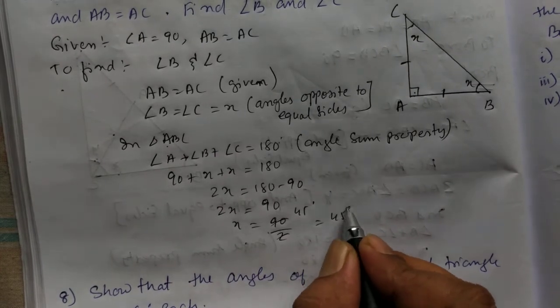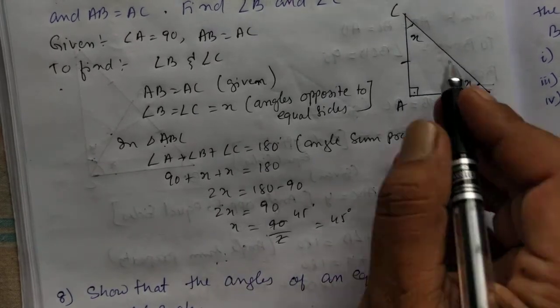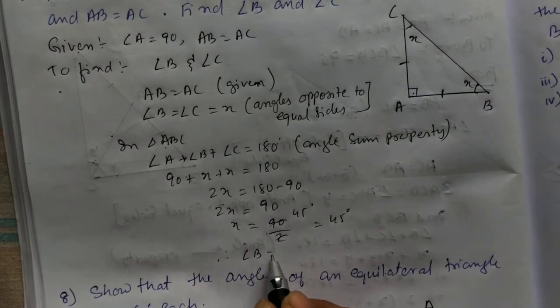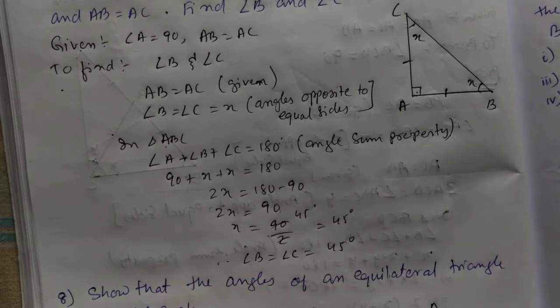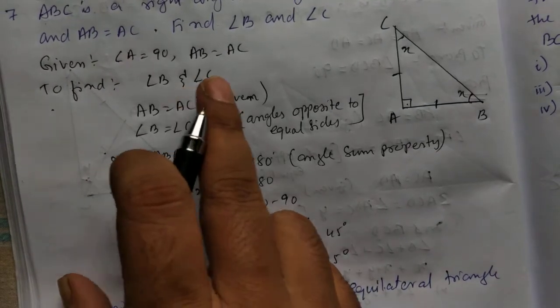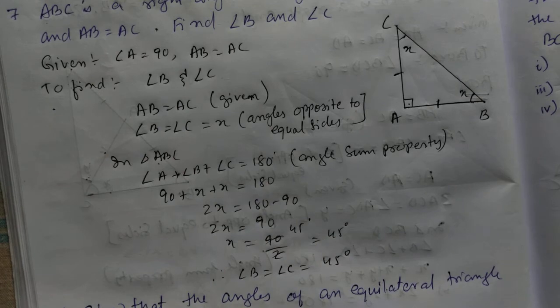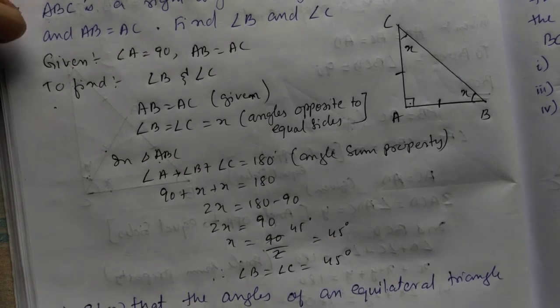So you're getting X is 45 degree. That means X is nothing but B and C. Therefore, angle B and angle C is equal to 45 degree. We're going to find this. We've got the answer as 45 degree. You can pause the video to write the solution.